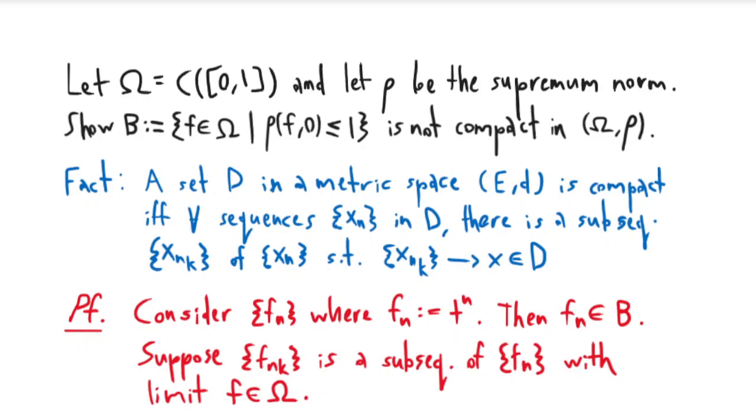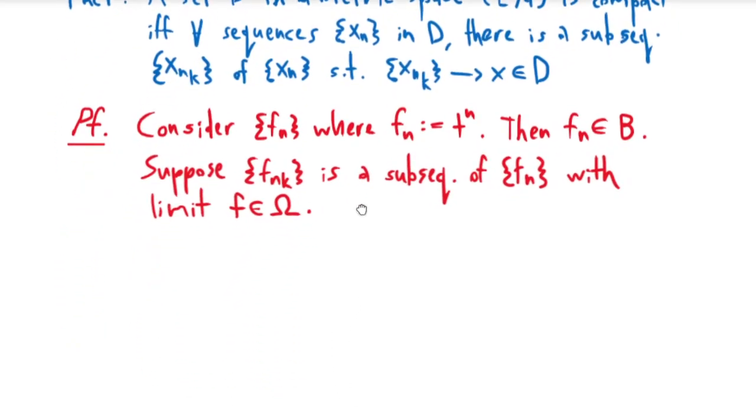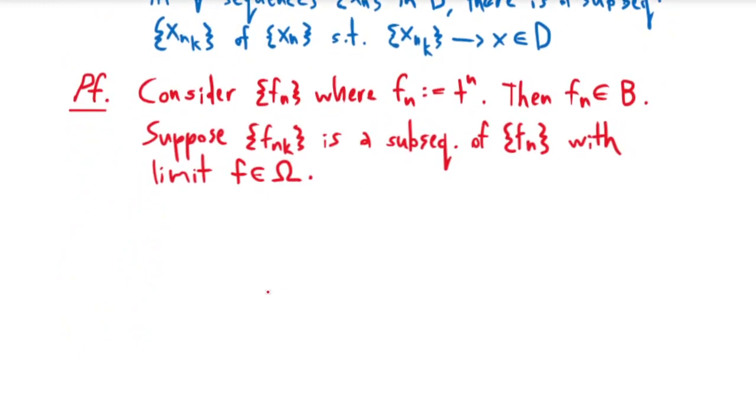For contradiction we're going to assume that this does in fact converge, and then we'll see that that's actually impossible. If this were true, what would it mean? Well it would mean that for n sufficiently large, the supremum norm of f_{n_k} and f could be made arbitrarily small.